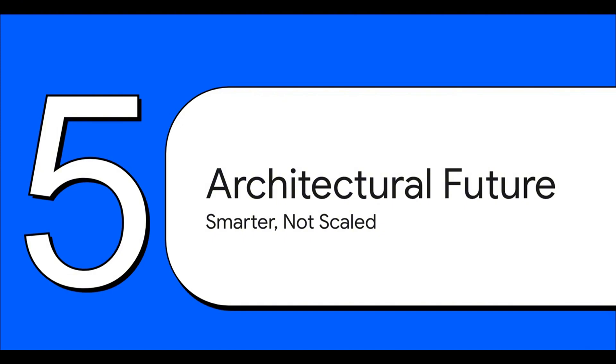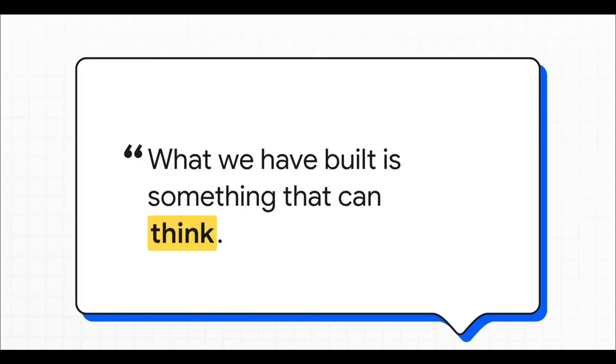So, what does this all mean for the bigger picture? Well, this is about way more than just impressive test scores. This points to a future for AI that's defined by how it's built. It's architecture, not just by how big it is. And listen to this. Guan Wang, one of the brilliant minds behind HRM, he didn't pull any punches. He said, chain of thought prompting is just a shortcut. What we have built is something that can think. Now, that is a bold claim, but based on the results we just saw, it had some serious weight.